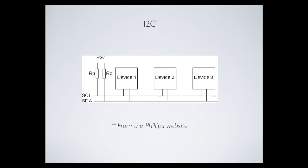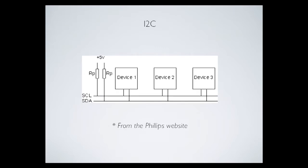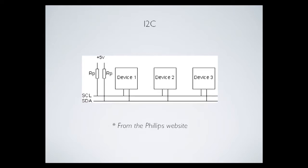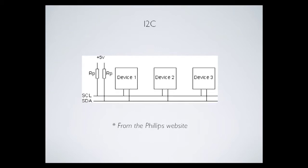Basically, you send out a start, then an address for which device you want to talk to, then the command or register address, then the data. One device may have ten different things it can do — you address the device, specify the register address for the function you want, then send the option for that function. On an LCD it's simple because you're going to write to it all the time, not read from it. I'll focus on writing for this episode, not the full I2C protocol.